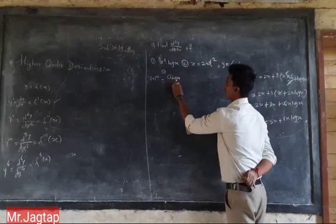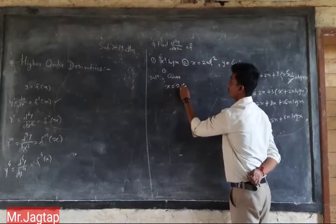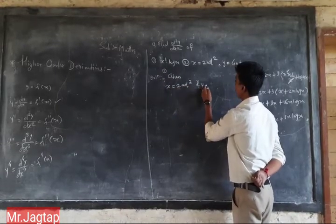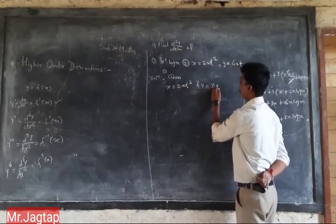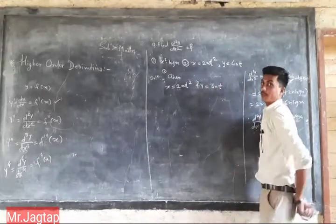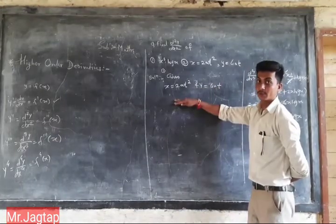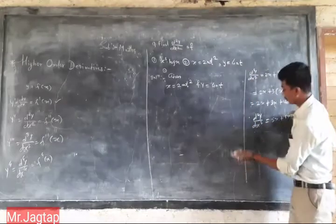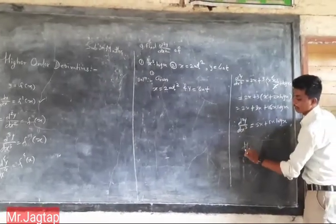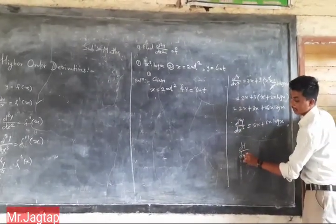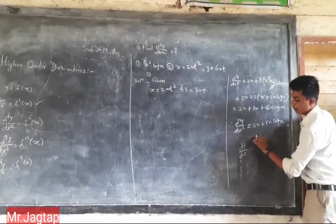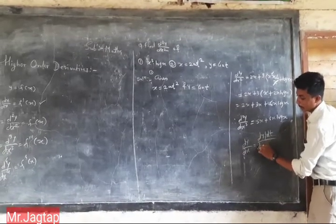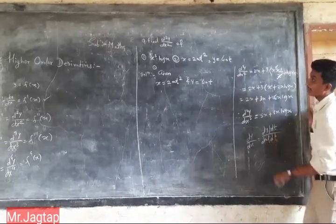First of all we find the first derivative. For a two-parameter parametric function, dy/dx equals dy/dt upon dx/dt. Here we differentiate with respect to t.